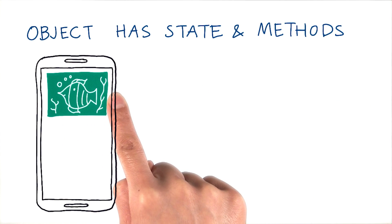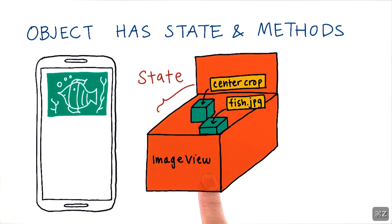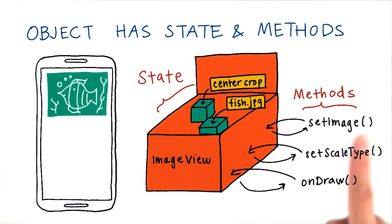To show an image view on the screen, we actually have a Java object for image view inside of the app. This particular image view contains state information, like which image should be shown, as well as the scale type, like centerCrop. Again, there's a bunch of other fields that make up the state of an image view. I just didn't draw them here. There's methods like setImage, setScaleType, and even more complex methods, like onDraw, to handle drawing this image view onto the screen.